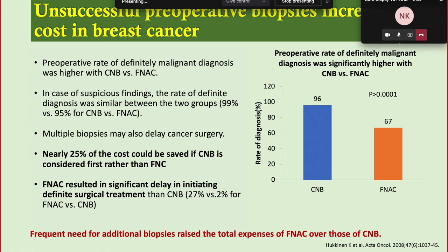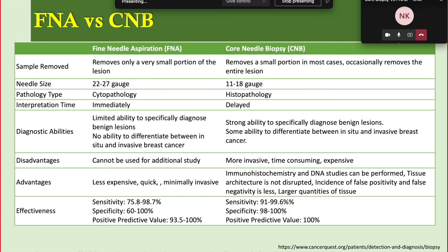Unsuccessful preoperative biopsy increases the total burden for breast cancer patients. The preoperative rate of definite malignant diagnosis was higher with core biopsy compared to FNAC, which could be inconclusive in some cases, increasing pre-treatment time. In cases of suspicious findings, the rate of definite diagnosis was similar between both groups. Multiple FNAC attempts may also delay cancer surgery, and nearly 25% of cost could be saved if core biopsy is considered first. FNAC resulted in significant delays in initiating definitive treatment, and frequent additional biopsies raised total costs, whereas core biopsy provides definitive diagnosis with IHC markers approximately 90–100% of the time.